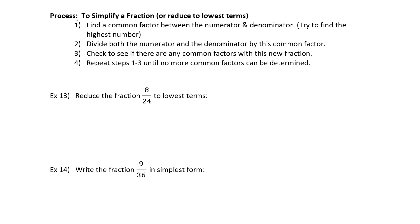Step 1: find a common factor between both the numerator and the denominator — always try to find the largest one, but if you don't find it right off the bat, it's not a big deal. Step 2: divide the top and the bottom by the same value — if you divide the top and the bottom by the same value, you don't change the value at all. Step 3: check to see if there are any more common factors that can be taken out, and if there are, repeat steps 1 through 3 until there are no more common factors.